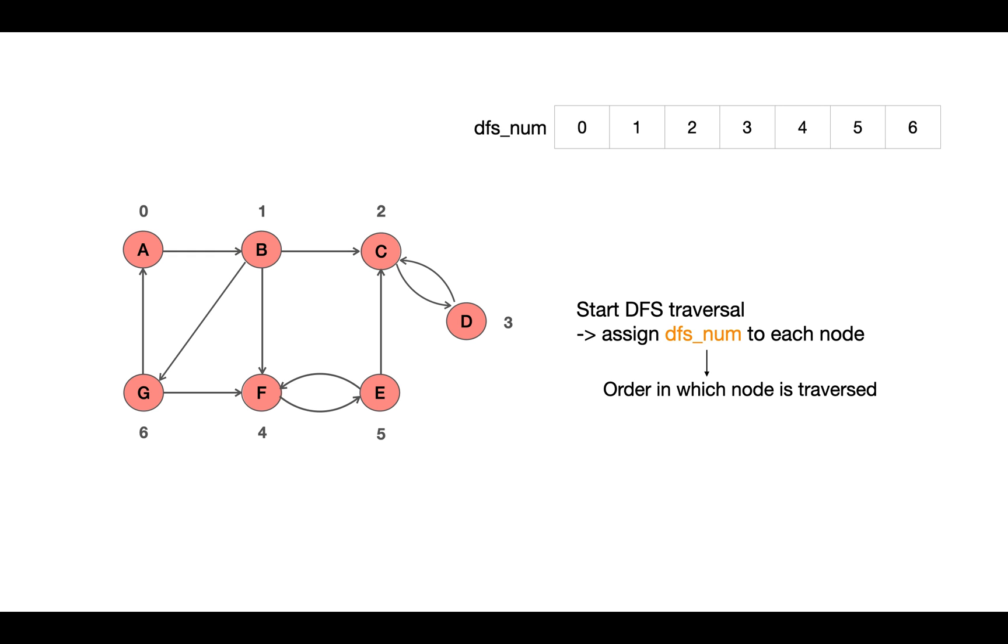So we keep an array which holds the number or vertex in the order it is traversed. Now with DFS_num, we assign DFS_low value to each node. DFS_low value is the smallest DFS number vertex which can be reached from it.